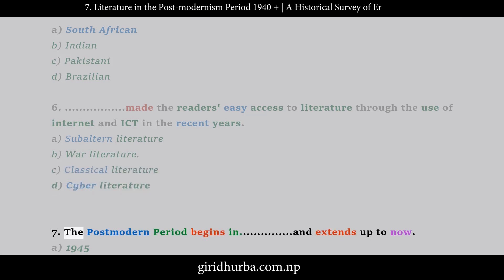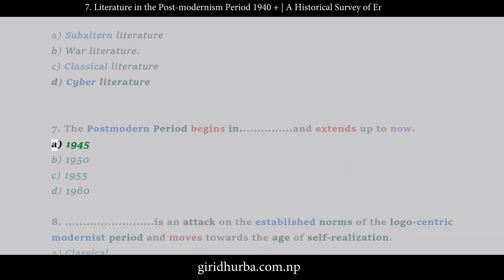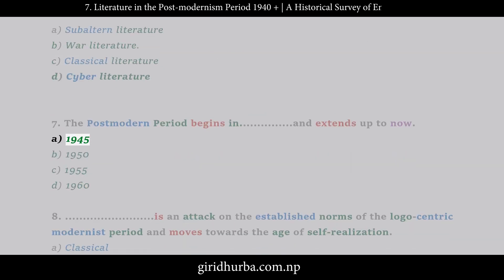Question 7: The Postmodern Period begins in which year and extends up to now? A. 1945. B. 1950. C. 1955. D. 1960.